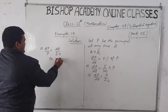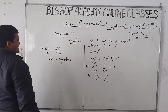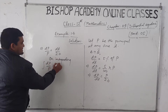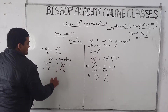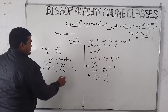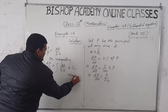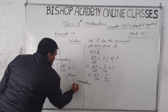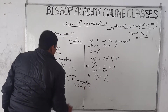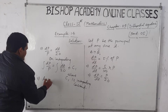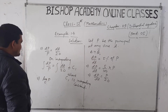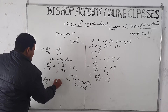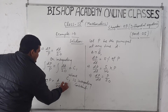On integrating both sides: ∫dP/P = ∫dt/20 + C1, where C1 is the integrating constant. Since principal is always positive, we write log P = T/20 + C1.